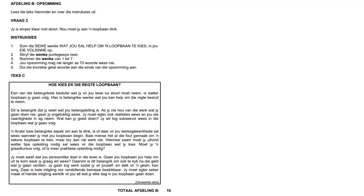Hi guys, let's take a look at this example of an Opsomming and how to do it. The very first thing I need to tell you is do not jump into the paragraph first. Please read the instructions first, because that will help us when we read the paragraph to know exactly what to look for. So the instructions here are to get seven tips on what will help you to choose a career. You'll get seven marks for your facts and three marks for your taal.